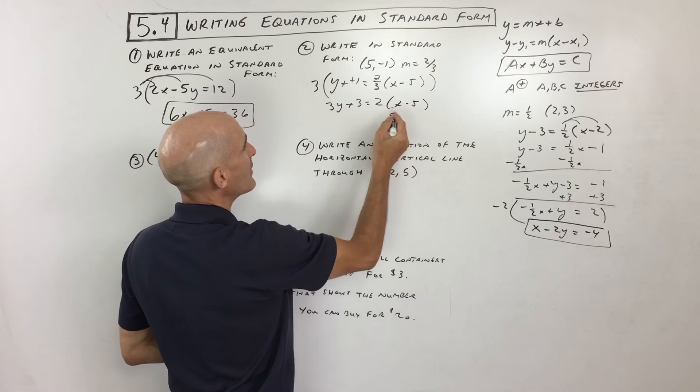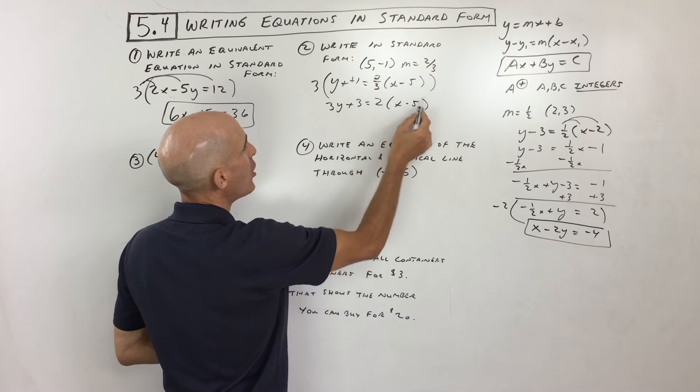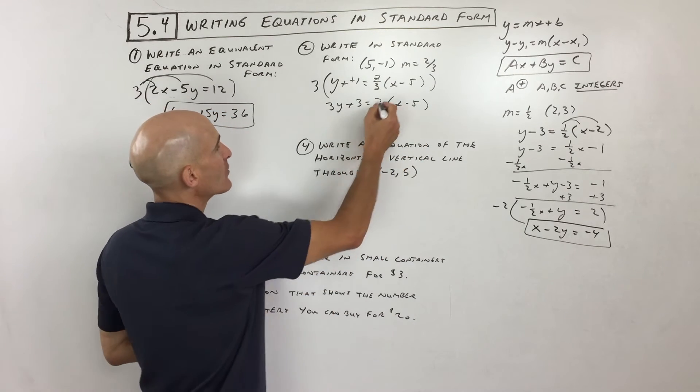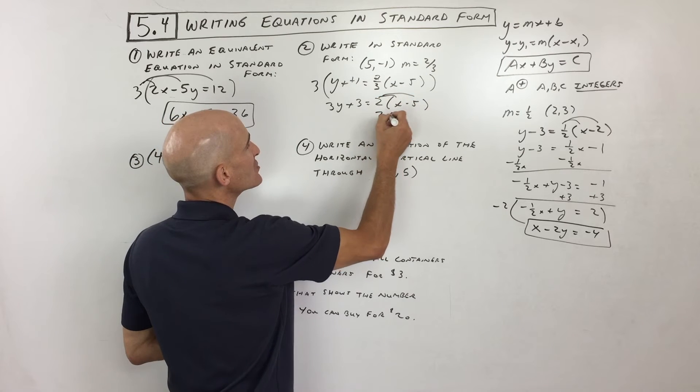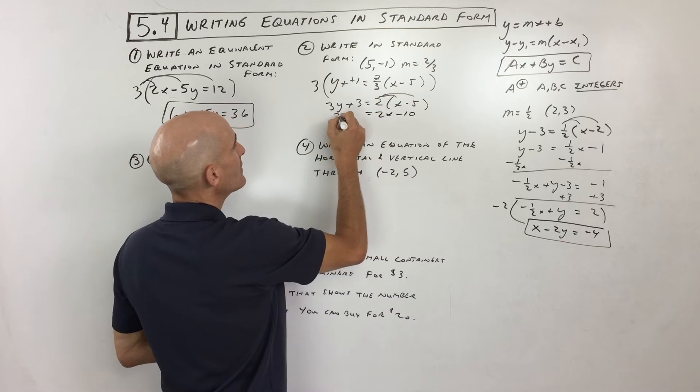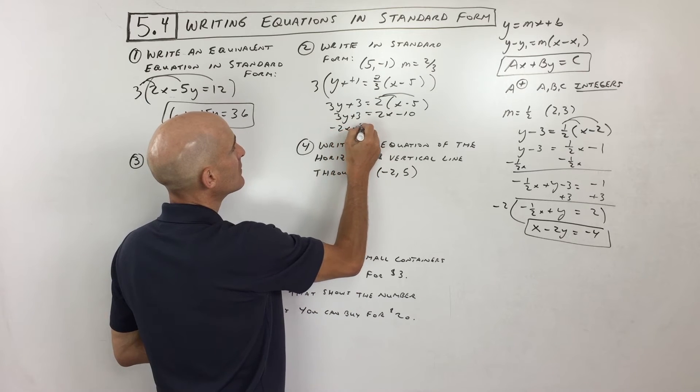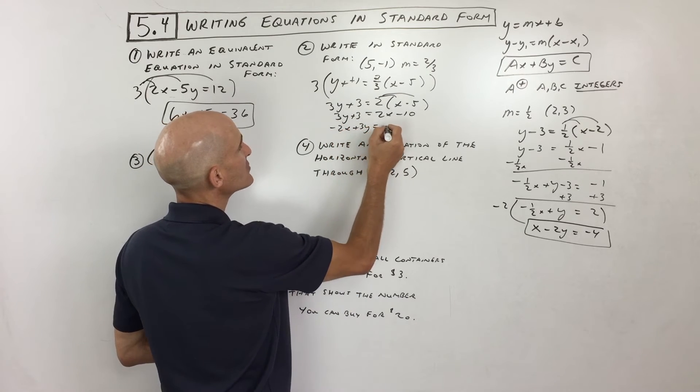Now you don't want to multiply the x and the 5. This is all one group. So I'm just multiplying the 2 thirds times 3. Okay, now we've gotten rid of the fractions. I'm going to distribute. So this is 2x minus 10 equals 3y plus 3. I'm going to subtract 2x.